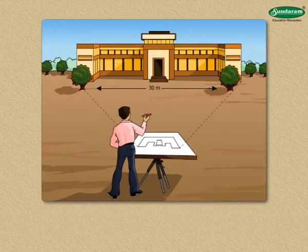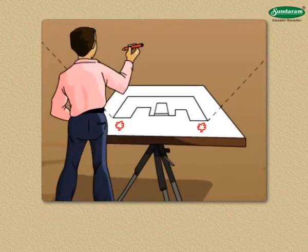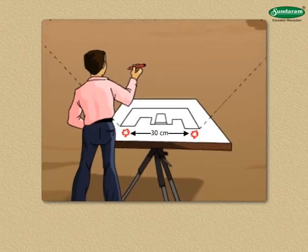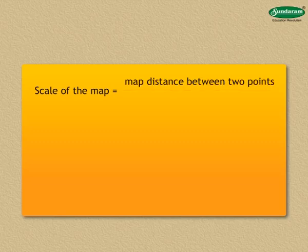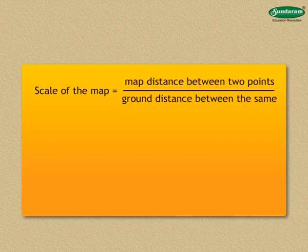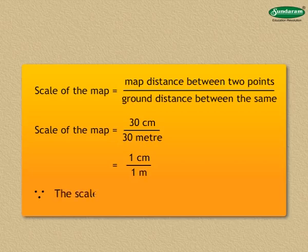The ground distance between the two trees is 30 metres. The map distance between the same two trees is 30 centimetres. The scale of the map is equal to 30 centimetres divided by 30 metres, which equals 1 centimetre divided by 1 metre. Thus, the scale of the map is 1 centimetre to 1 metre.